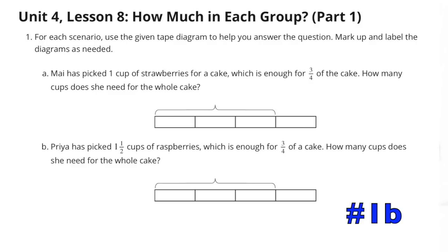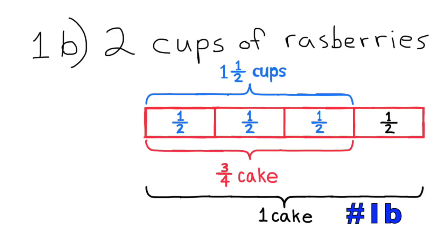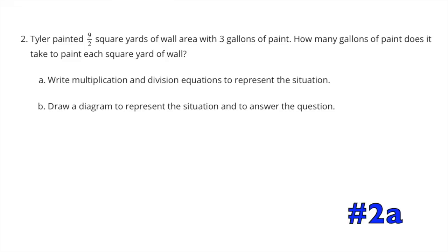Problem 1b: Priya has picked one and a half cups of raspberries, which is enough for three-fourths of a cake. How many cups does she need for the whole cake? The one and a half cups in blue is divided into halves — three halves make three-fourths of a cake. To make one whole cake, Priya would need another half cup, so she would need two cups of raspberries.